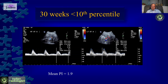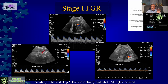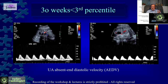Clinical examples: First, a 30-week gestation with weight below the 10th percentile. The uterine artery PI is high and the umbilical artery PI is high — this is Stage 1 FGR. In Stage 1 FGR, we keep a close watch typically every week to see if things are going well. If everything goes well, we can induce labor at 37 weeks of gestation, keeping a close watch on the fetus even during labor.